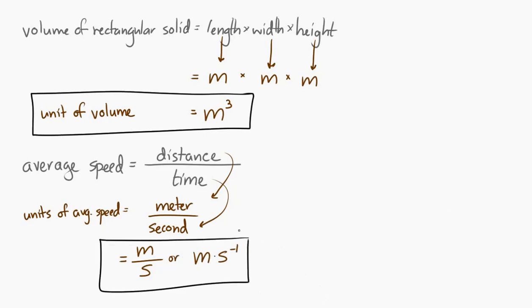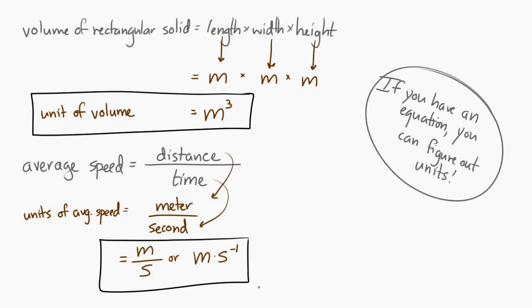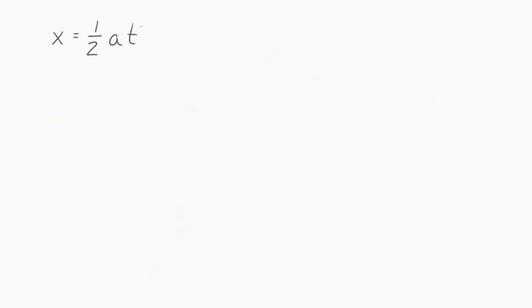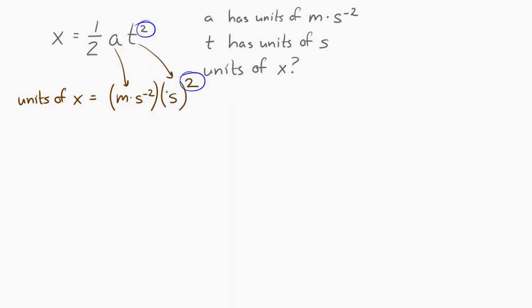And I could give you any old equation. And if I give you enough information about the units on one side, you should be able to figure out the units on the other side. So, for example, let's say we had x equals one half at squared. And I'm going to tell you that a has units of meters per second squared and t has units of seconds. And I want to know what the units of x would be in this situation. Well, a has units of meters per second squared. So, if we switch over to the unit view, we have meters per second squared from a. And then t provides units of seconds. But t is squared.